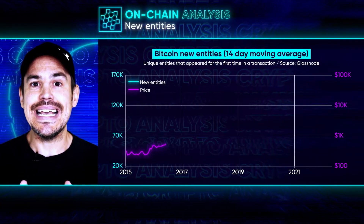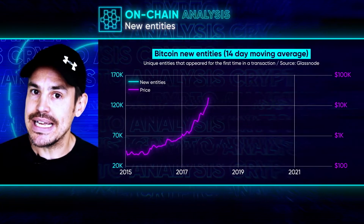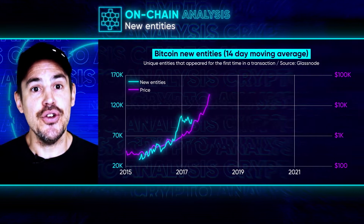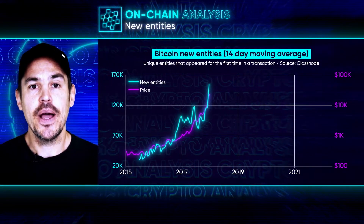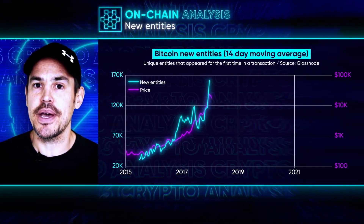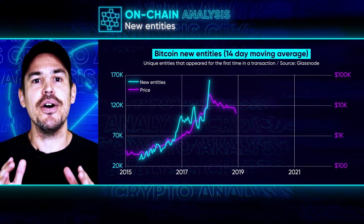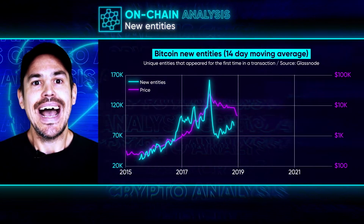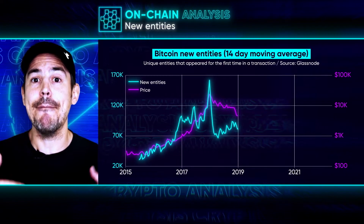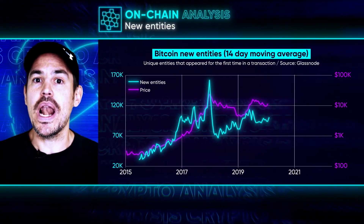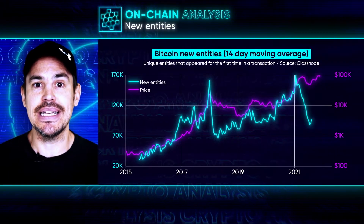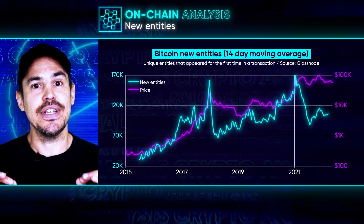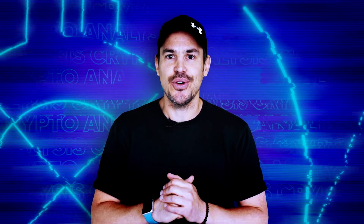Looking at the new entities chart, what we see is as the price of Bitcoin rises, so does the number of new entities in the network. Conversely, when we see a drop in the Bitcoin price, we see the number of new entities reduce. This is in line with the hype and mania in bull runs where lots of new entrants enter the space, and this is reduced significantly in bear markets where buying behavior changes.